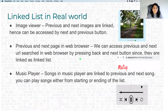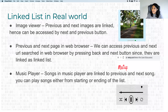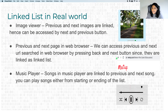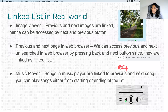Let's discuss some common real-world use cases where linked lists are used. The image viewer on your PC is one — the previous and next images are linked to each other, which is why you can click previous or next from the current image. Another common use case is the browser, which has previous and next buttons that are implemented as linked lists. The third is the music player — if you want to play a previous song, just click previous; the songs are linked as a linked list behind the scenes.